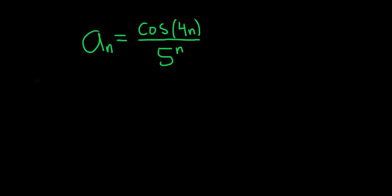So there's a couple ways to do this problem. Perhaps the easiest way is to look at it and realize that the numerator, cosine of 4n, is always going to be a number between 1 and negative 1, no matter what. So it doesn't matter how big n gets, the top piece is always between negative 1 and 1.